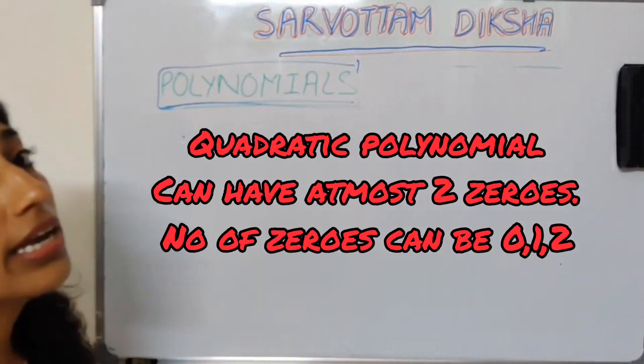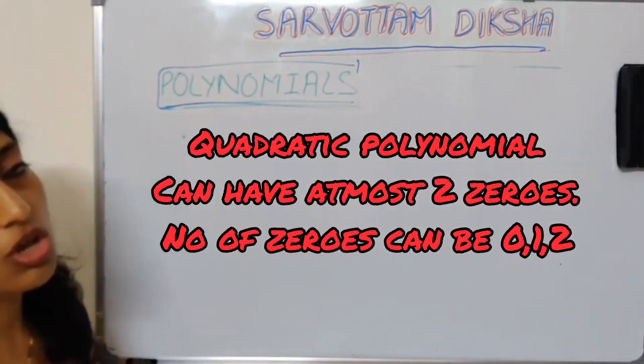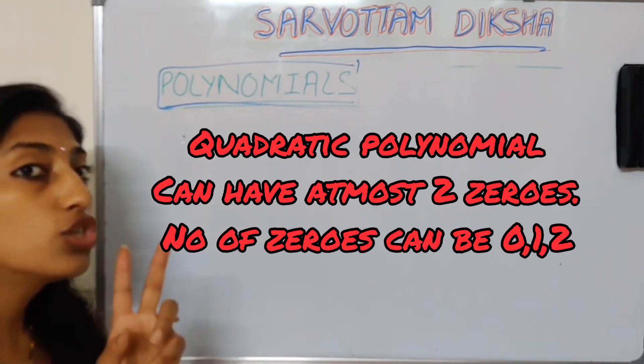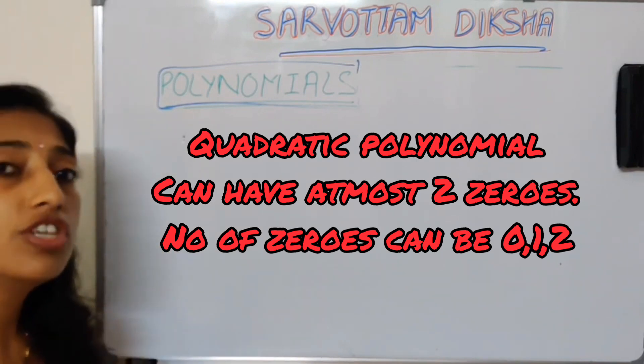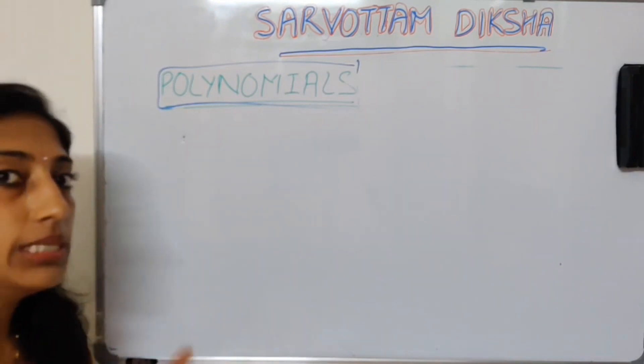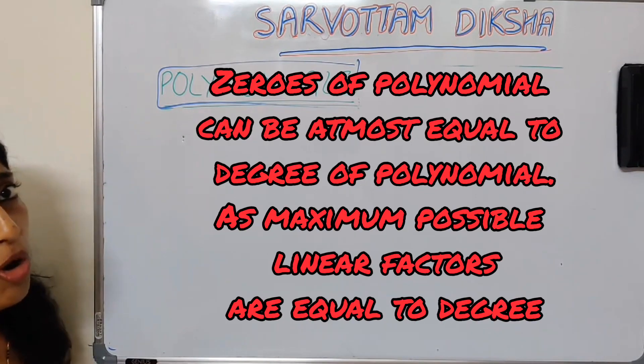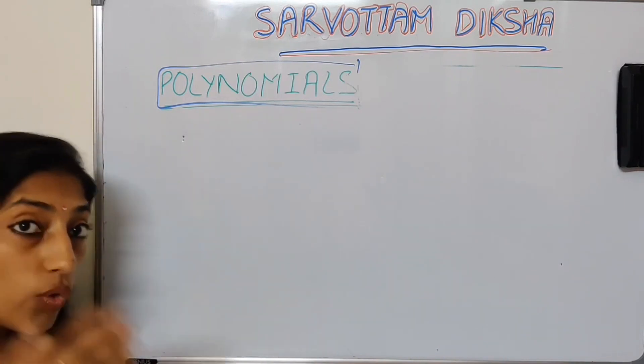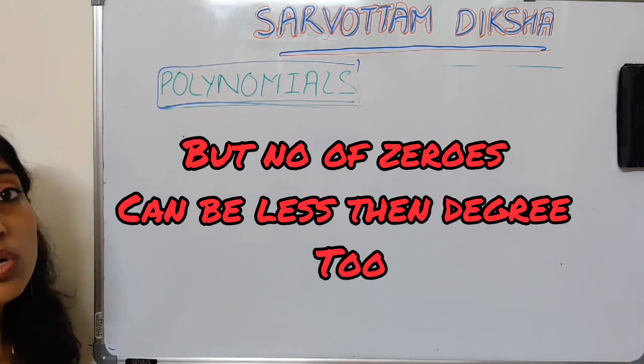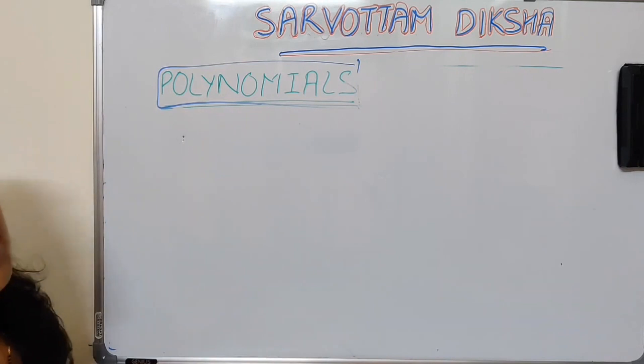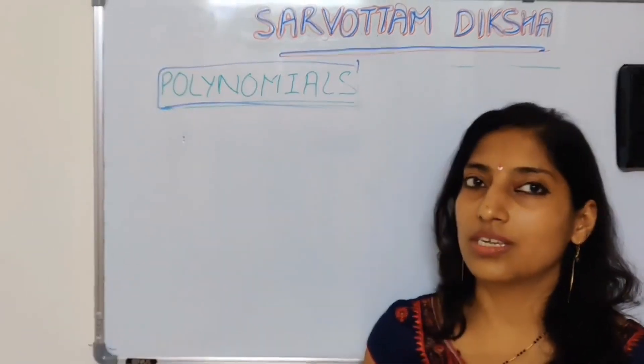So we conclude that maximum possible 0s of a quadratic polynomial is 2, but number of 0s can be less - it can be 0, it can be 1. We said maximum number of 0s of a polynomial is equal to degree of polynomial, but it is not the only case - we should use word 'at most' here. Maximum possible is equal to degree, but we can have lesser 0s also as we have seen here.